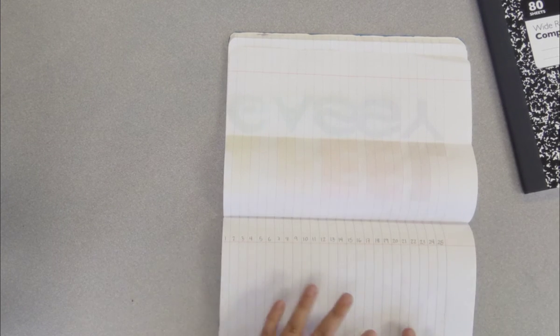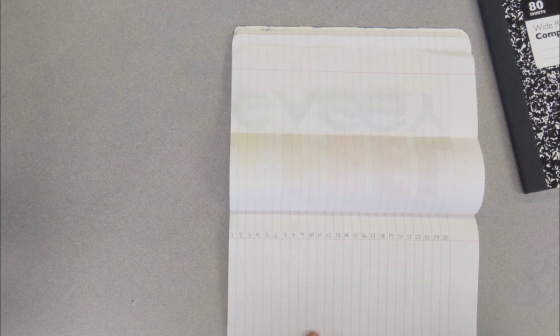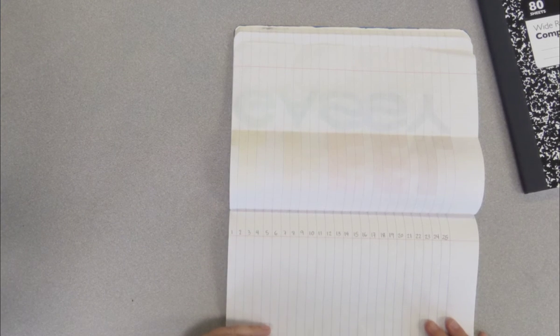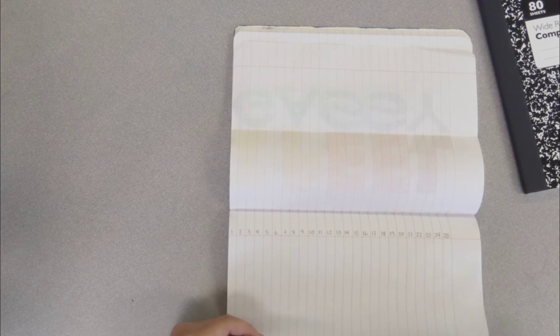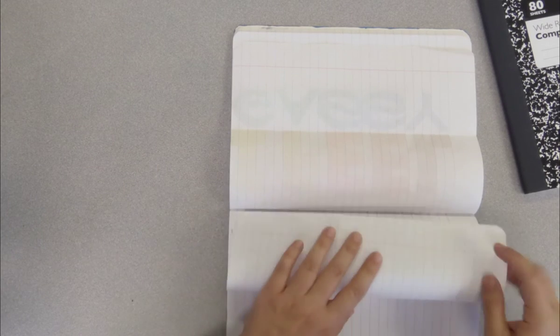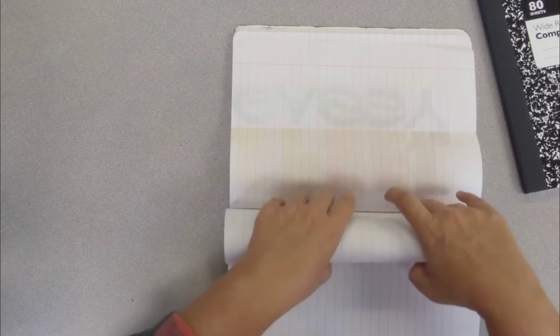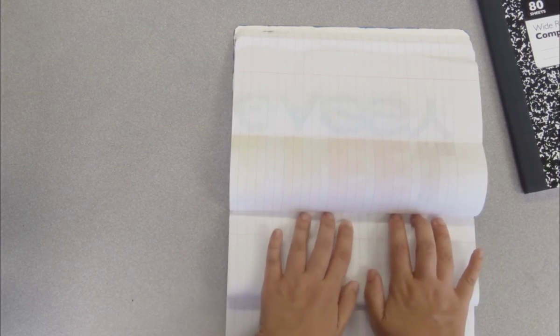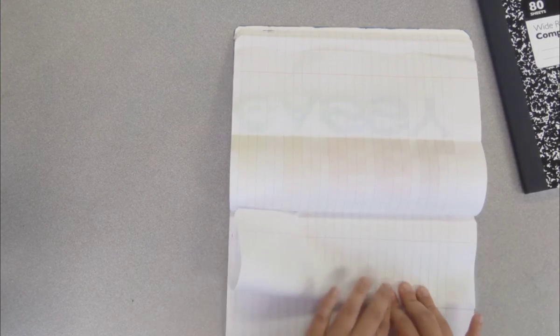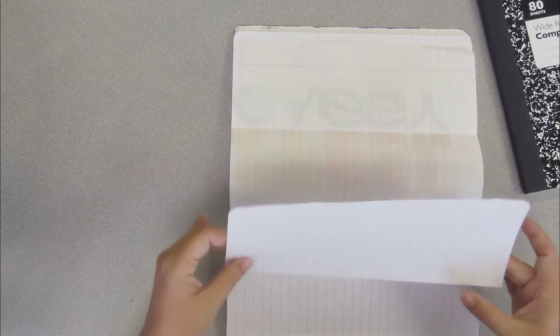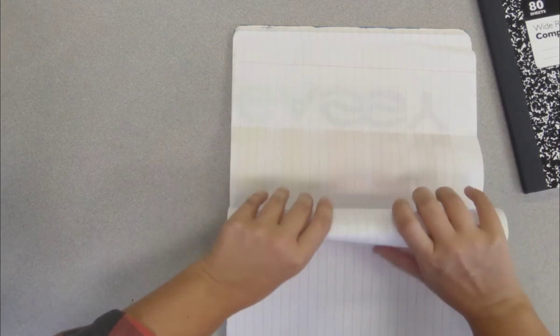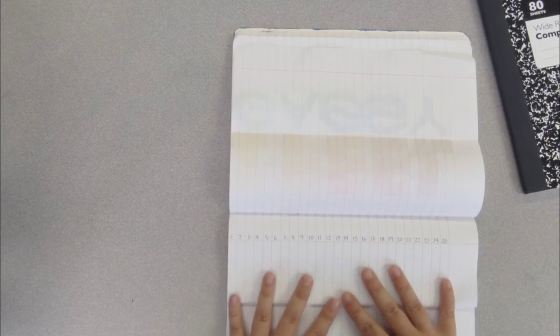Next, I want you to fold your piece of paper in half. So if you're using a composition book, you can just tuck this in, make sure that everything is lined up, and fold it in half.